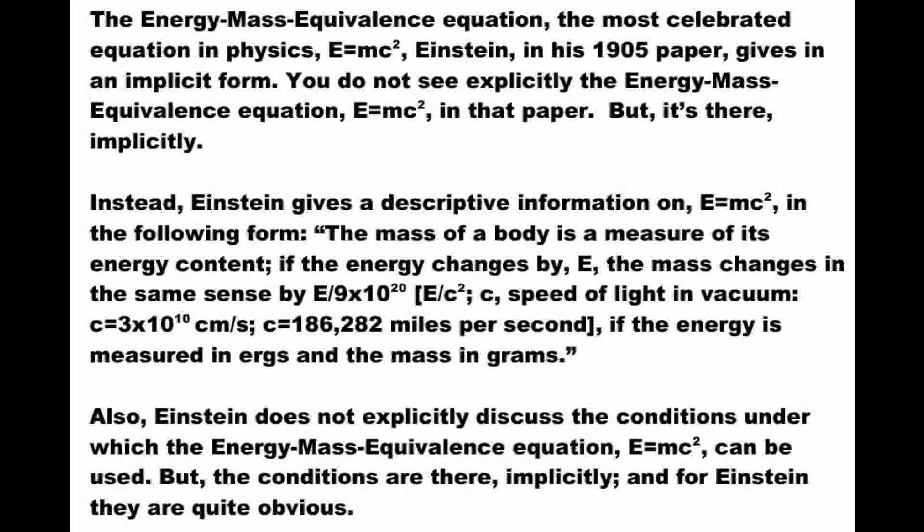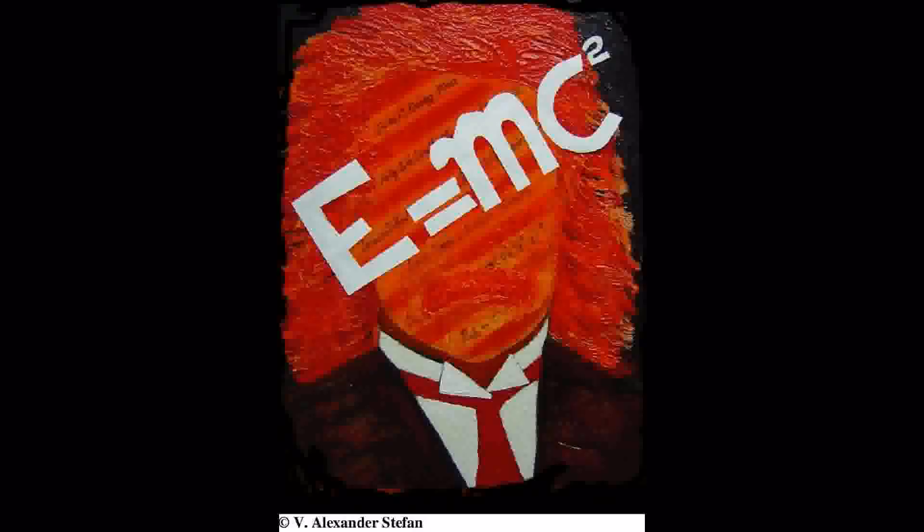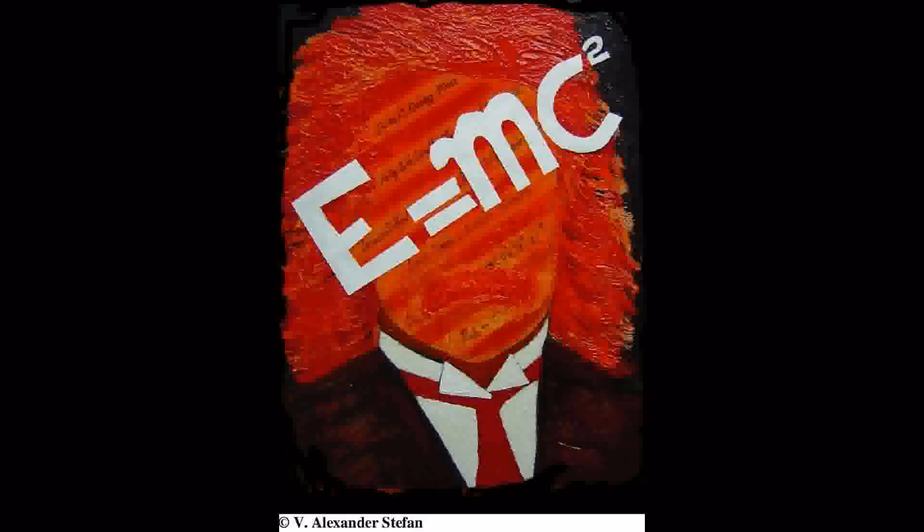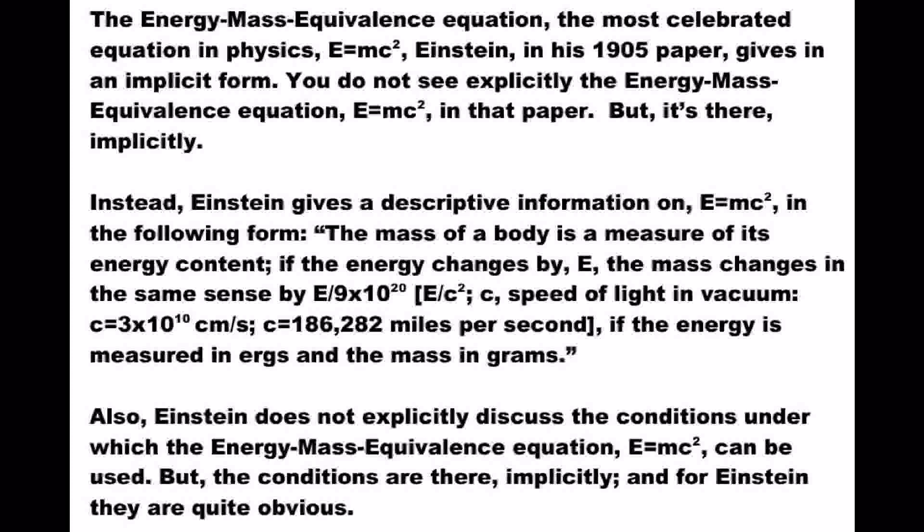The energy-mass equivalence equation, the most celebrated equation in physics — Einstein, in his 1905 paper, gives in an implicit form. You do not see explicitly the energy-mass equivalence equation in that paper. But it is there, implicitly. Instead, Einstein gives a descriptive statement: the mass of a body is a measure of its energy content; if the energy changes by E, the mass changes in the same sense by E divided by the velocity of light squared. Also, Einstein does not explicitly discuss the conditions under which the energy-mass equivalence equation can be used, but the conditions are there implicitly, and for Einstein they are quite obvious.